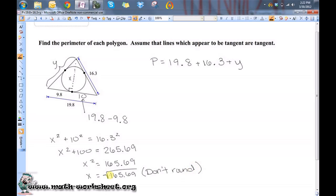Leave it as the square root of 165.69, because when I put it into the formula to find y here, I'm just going to end up squaring it, which is going to keep me from having any rounding errors.